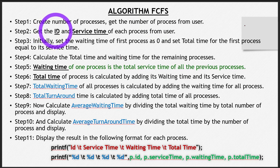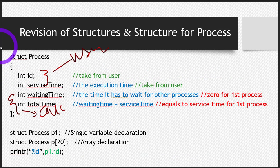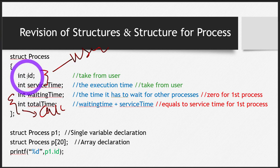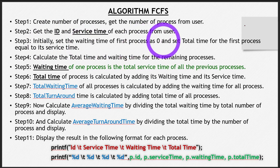The second step is to get the ID and service time of each process from the user. You will take these two things — the ID and the service time — from the user. That's the second step.